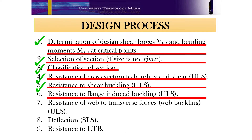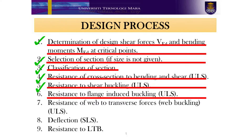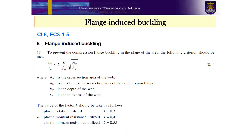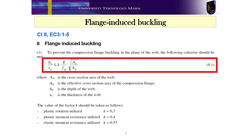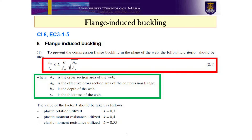The next step is to check resistance to flange induced buckling. To prevent the possibility of the compression flange buckling in the plane of the web, EC3 part 1.5 requires that the ratio HW/TW of the web should satisfy the criterion given in equation 8.1, in which the description of the values is shown in the green box.